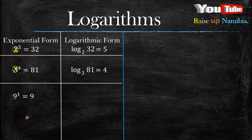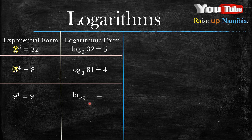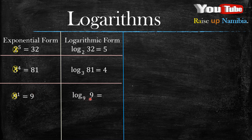Let's look at a third example: 9 raised to the power 1 equals 9. Ask yourself what is your base — your base here is 9, which is raised to the power 1. Write the word 'log', then your base which is 9, and then your equal sign. Ignore the base because you already wrote it. On the left-hand side you have a 1 which you take to the right, and the 9 on the right you take to the left.